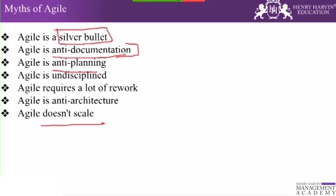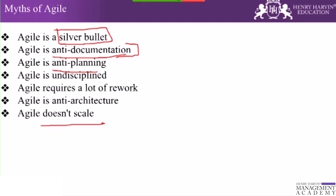The sixth myth is agile is anti-architecture. Agile believes in building things simply rather than adding unnecessary complexity. One agile principle states 'simplicity — the art of maximizing the work not done.' Architecture should evolve over time and be planned in a manner that accommodates progressive changes. The seventh myth is agile does not scale — scaling options exist in agile through Scrum of Scrums meetings, SAFe, LeSS, and other frameworks for scaling agile from team to organization level.